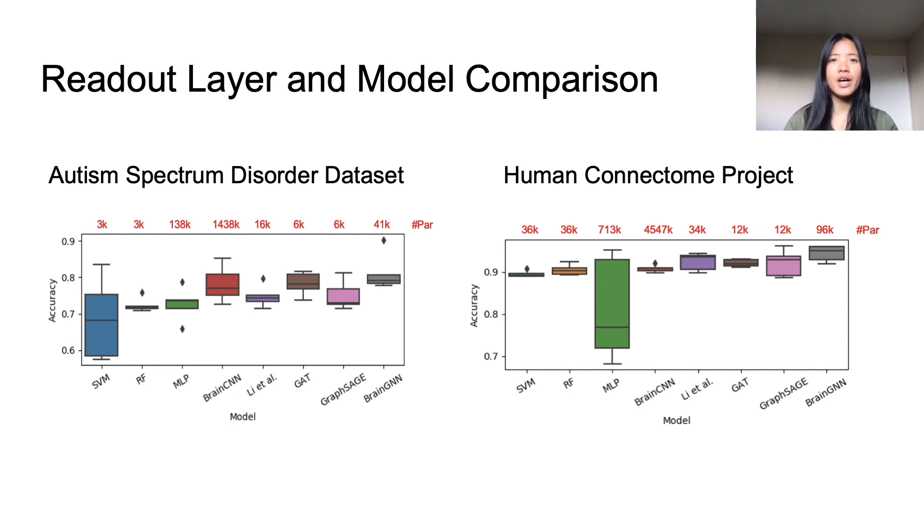When comparing the BrainGNN to other existing models that analyze the same dataset, the BrainGNN improved accuracy between 3% and 20% for ASD classification and achieved an average accuracy of 93% for the HCP dataset. It consistently outperforms most of the other models in both datasets and has a smaller error range, which is why the study believes that this type of pipeline should be further utilized not only for fMRIs but for other neural imaging techniques as well.